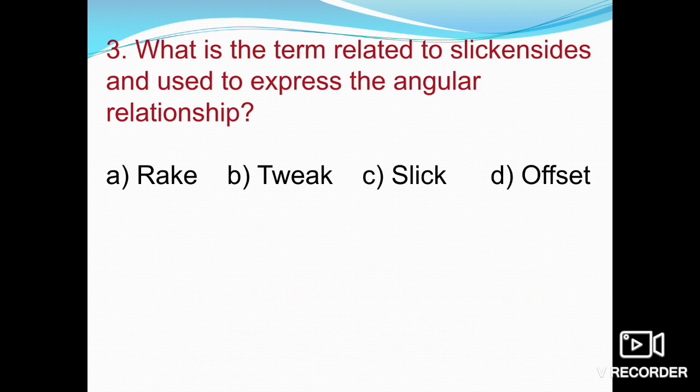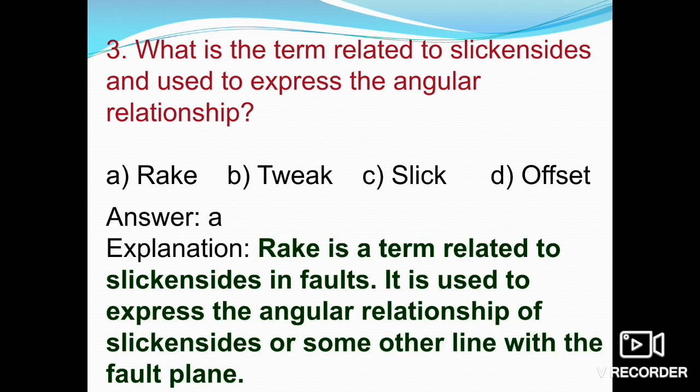The next question asks: what is the term related to slickensides used to express the angular relationship of slickensides or some other line with the fault plane? We all know that rake is the term related to slickensides in the faulting system. It is used to express the angular relationship of slickensides or another line with the fault plane. So option A — rake — is the right answer.